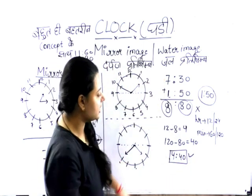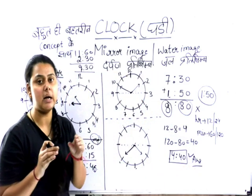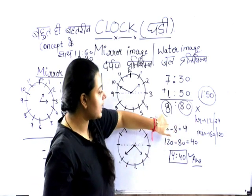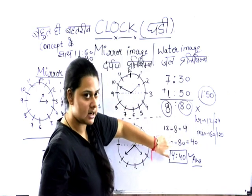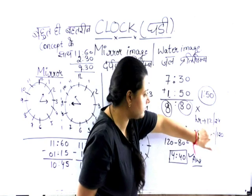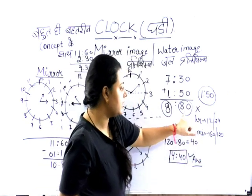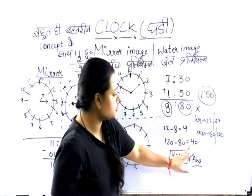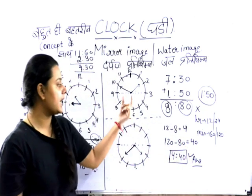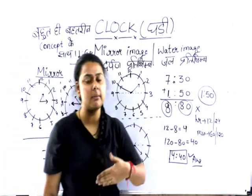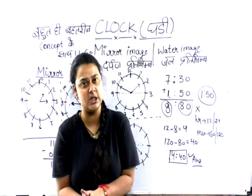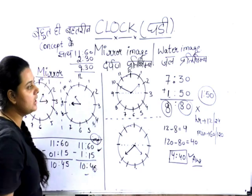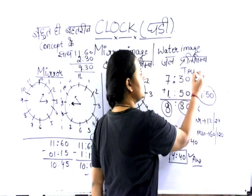So now you understand what to do. Whatever time is given, add 7:30 for the water image. If the hours are less than 12, subtract from 12; if more, subtract from 24. For minutes, if it goes negative, subtract from 120. If you use the diagram it will be time-consuming, but when you use the short trick you can solve it quickly. This was the trick for mirror image and the trick for water image.